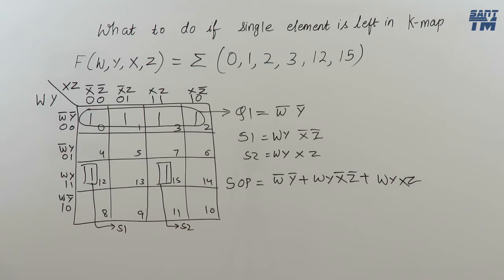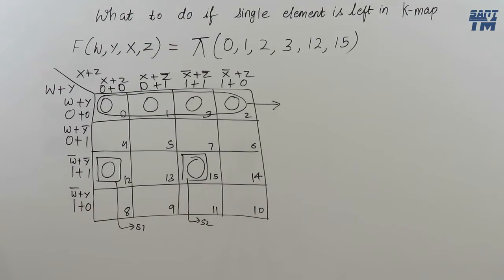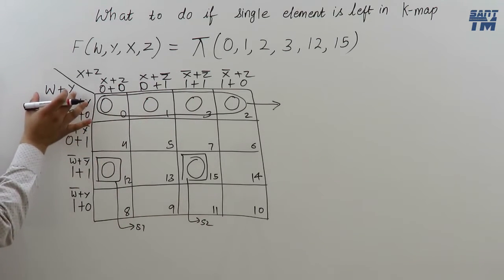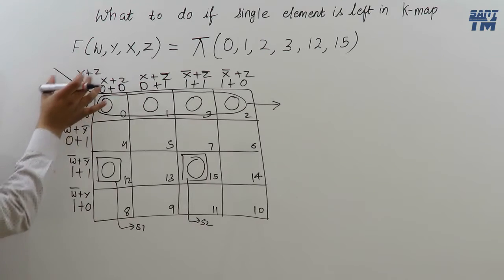Now, we consider one same case for POS also. Now, we consider the same example for POS also. We have already constructed the K-map. Only the difference between SOP and POS is that in case of POS, we have to write here the sums.